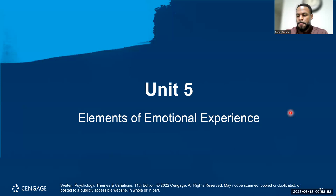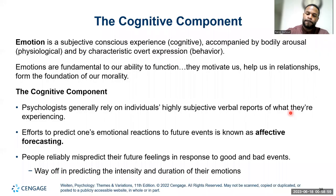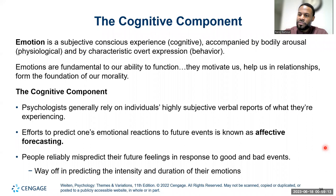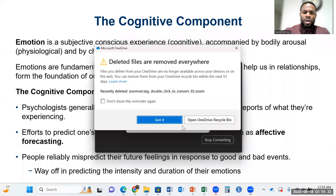The emotional experience — we'll finish off on that as a review. Emotion is any subjective conscious experience; the conscious experience is the cognitive component. We'll talk about the bodily arousal associated with emotion, which is the physiological component. And then we'll finish off with the overt expression, mainly in facial expression and behavior. Those three components are really pivotal and important to how and why we experience emotion in different ways.